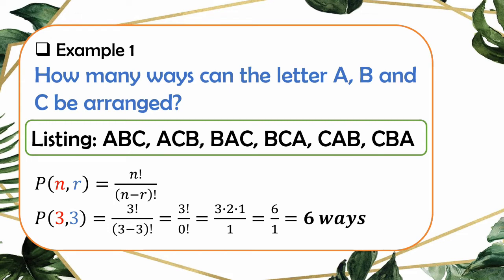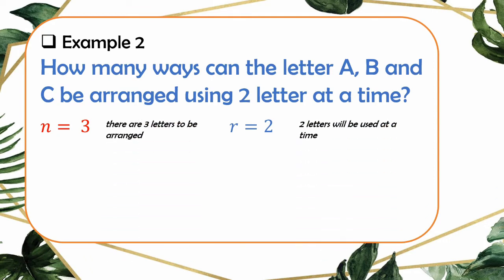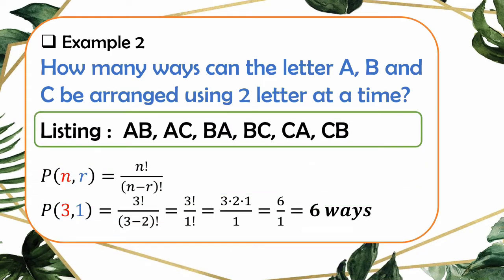Let's try the formula on Example 2, where we use 2 letters at a time. Our R is 2 because we use only 2 letters. Applying the formula with N equals 3 and R equals 2, we also arrive at 6 different ways. However, the set of arrangements is different from the first problem because only two-letter combinations are used.